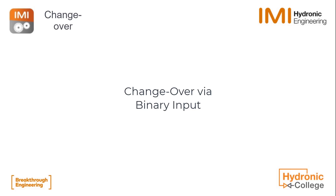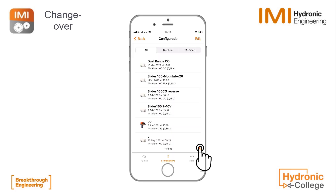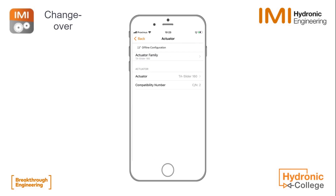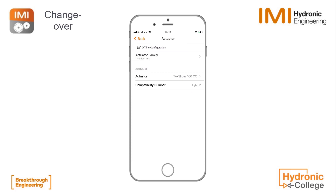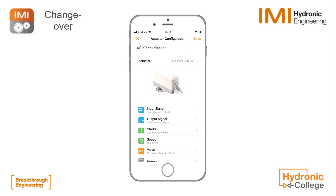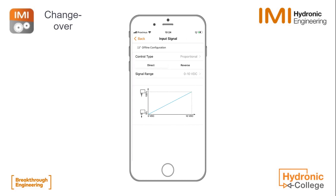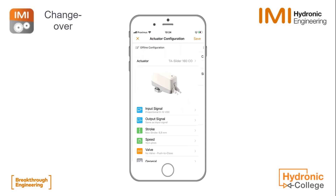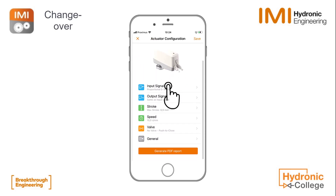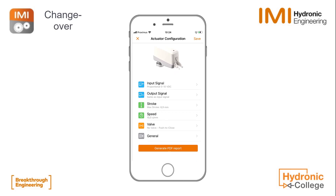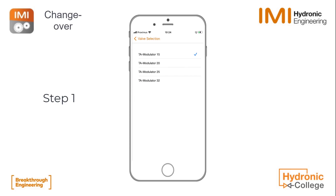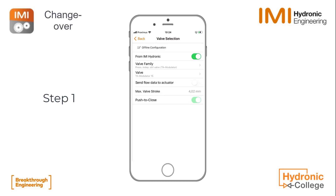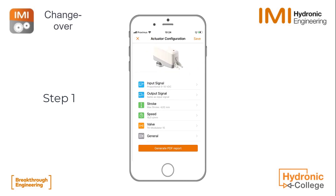Now let's look at the other option: changeover via binary input. Again I will demonstrate this using the offline configuration, creating a TA Slider 160 changeover configuration. Then we can go back and start configuring. Looking at the input signal first, you will see it's set to 0-10V proportional. For binary input changeover, that's not necessary to change. The first step is to set the correct valve — we click from IMI Hydronic and select the modulator that the slider is connected to, then send the flow data to the actuator.